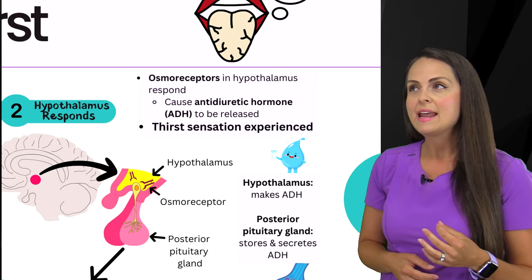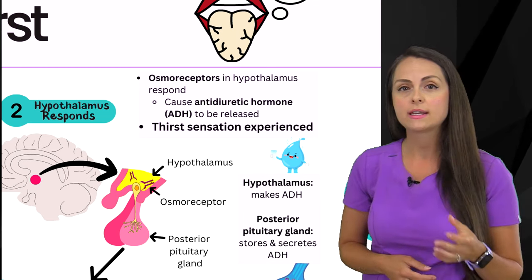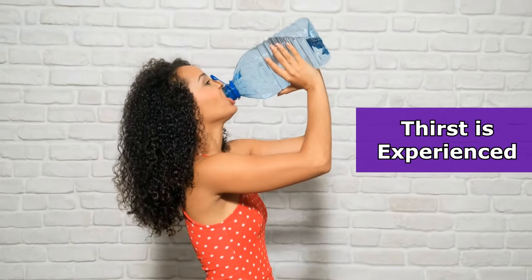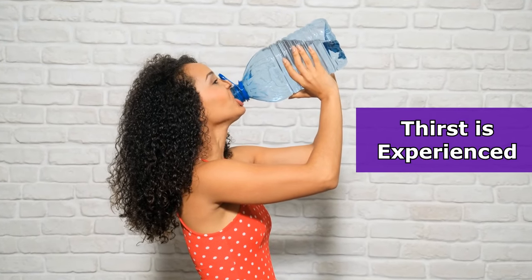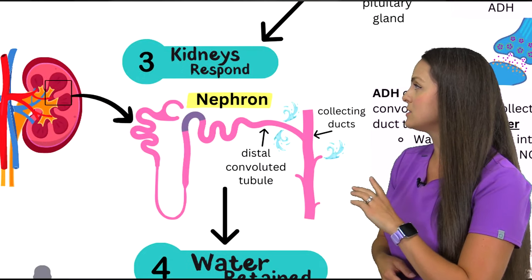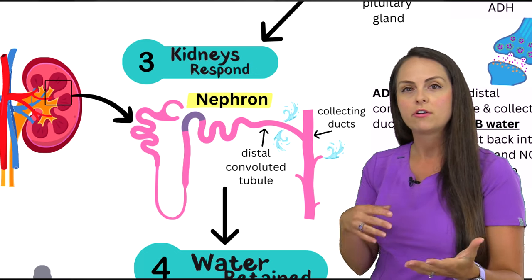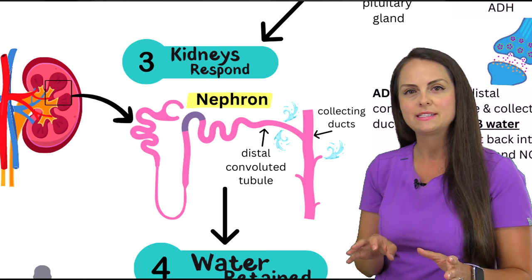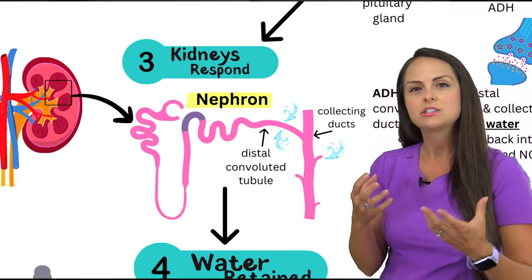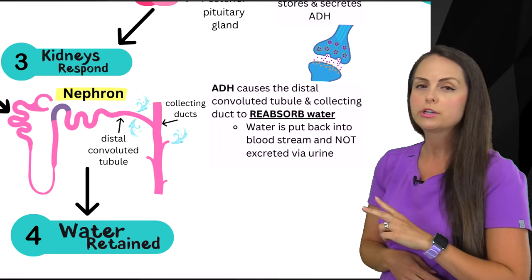When the osmoreceptors respond, they cause antidiuretic hormone — ADH, also called vasopressin — to be released. ADH is made in the hypothalamus but stored and secreted by the posterior pituitary gland. This is when the thirst sensation is experienced, giving the person a desire to drink fluid. Once ADH is secreted, it causes the kidneys to respond, particularly acting on the nephrons — the little structures within the kidney that help create urine.